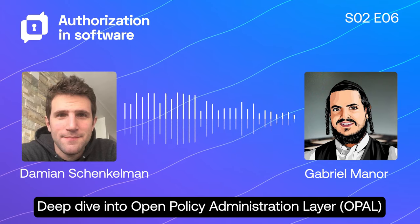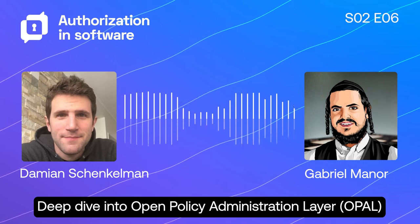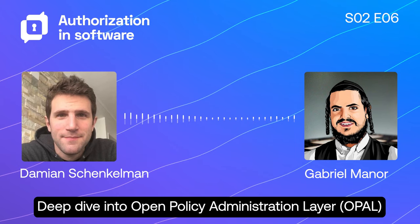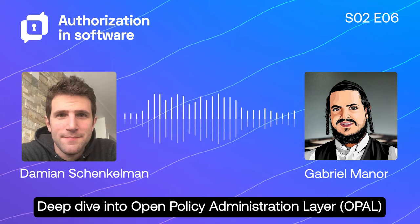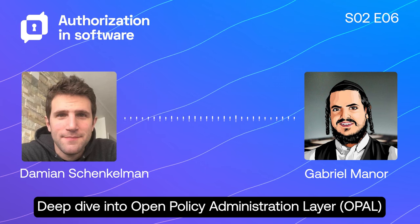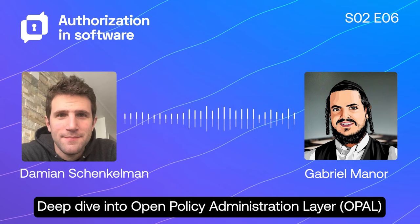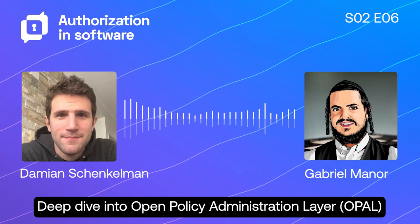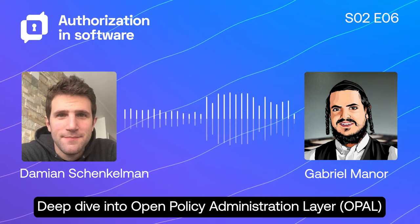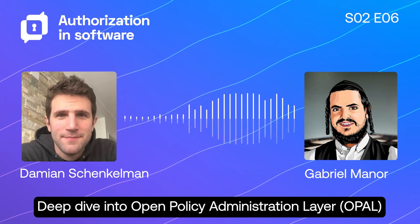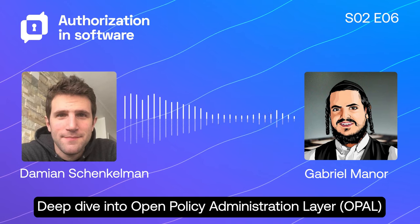Before we dive deep into OPAL, let's do a high-level overview of policies and attribute-based access control. This is a topic we discuss a lot on the podcast, but it's always good to do a quick refresher. In your own words, what's an authorization policy? How are they related to roles and attribute-based access control for people that maybe are new to this?